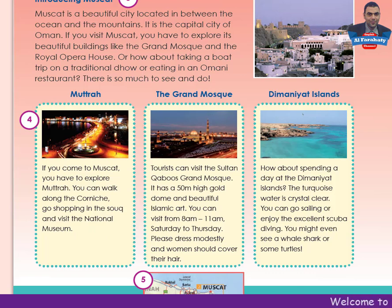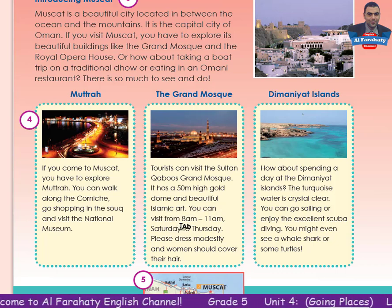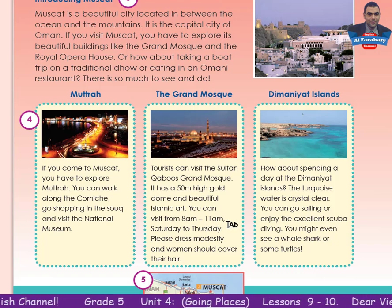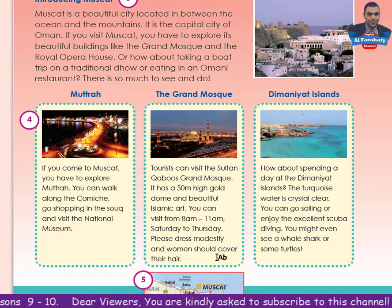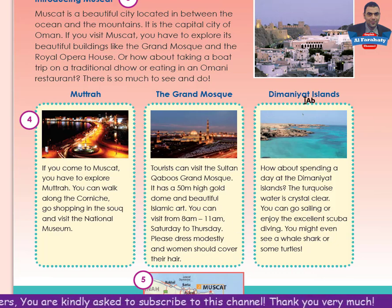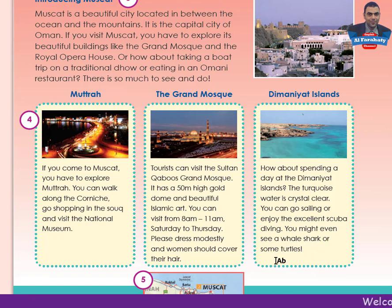The Grand Mosque. Tourists can visit the Sultan Qaboos Grand Mosque. It has a 50-meter-high gold dome and beautiful Islamic art. You can visit from 8 a.m. to 11 a.m., Saturday to Thursday. Please dress modestly and women should cover their hair. Daymaniyat Islands: how about spending a day at the Daymaniyat Islands? The turquoise water is crystal clear. You can go sailing or enjoy the excellent scuba diving. You might even see a whale shark or some turtles.